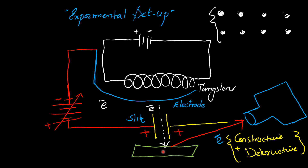These electron beams fall on a nickel crystal. Crystalline materials have atoms present at lattice points, and the lattice points of a crystal have a periodic and continuous arrangement. Whenever these electron beams fall on the nickel crystal, due to the planes of the lattice in the crystal, these electron beams cause constructive as well as destructive interference, which is detected by a detector.